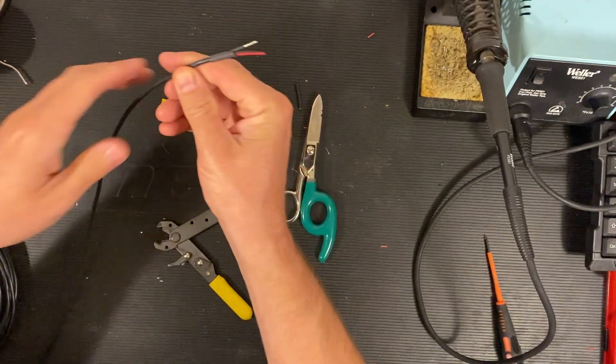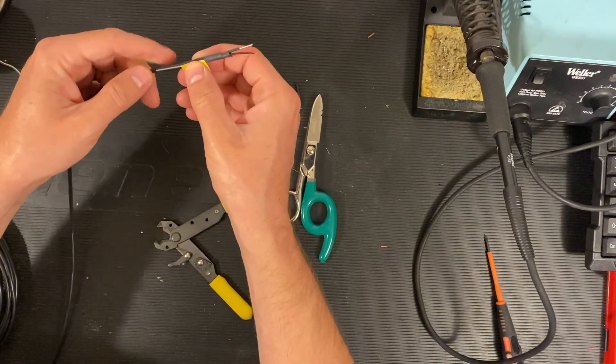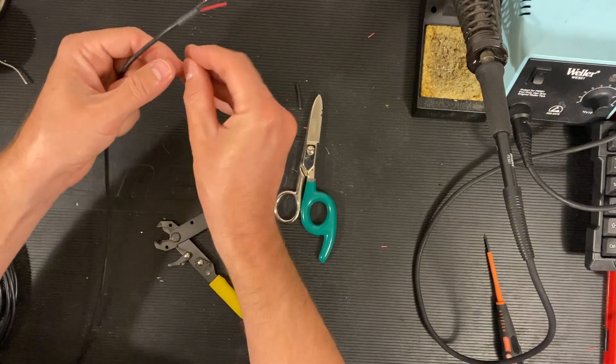Once the tubing is recovered, we take our label and space it approximately one inch from the end of the heat shrink tubing.